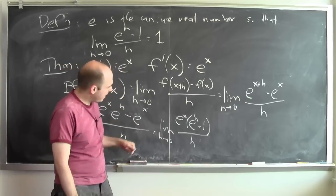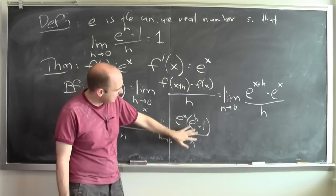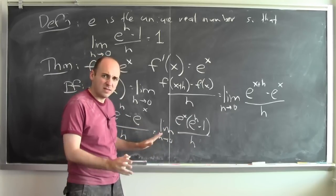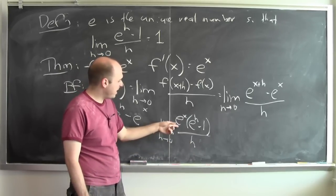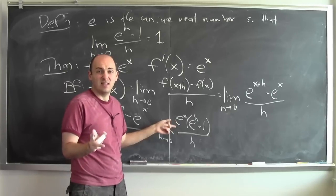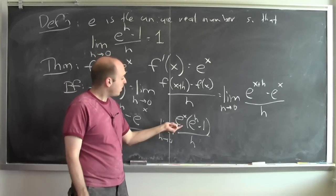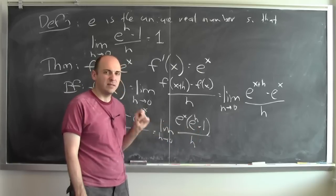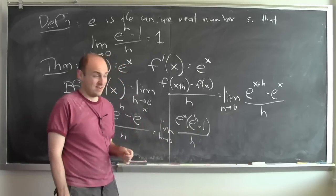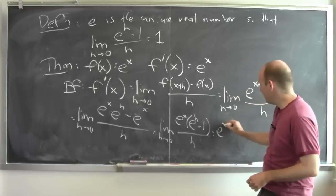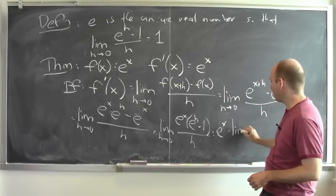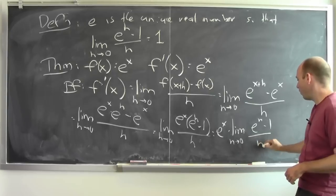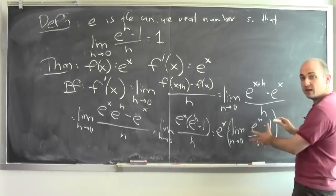I can do some more to this limit. I've got the limit of e to the x times this fraction, and e to the x doesn't involve h at all. So as far as h is concerned, wiggling h doesn't change e to the x at all — e to the x is really a constant in this limit calculation. So I can pull e to the x out of the limit, since the limit of a constant times something is the constant times the limit, provided the limit exists. So this is e to the x times the limit as h goes to 0 of e to the h minus 1 over h, provided this limit exists.